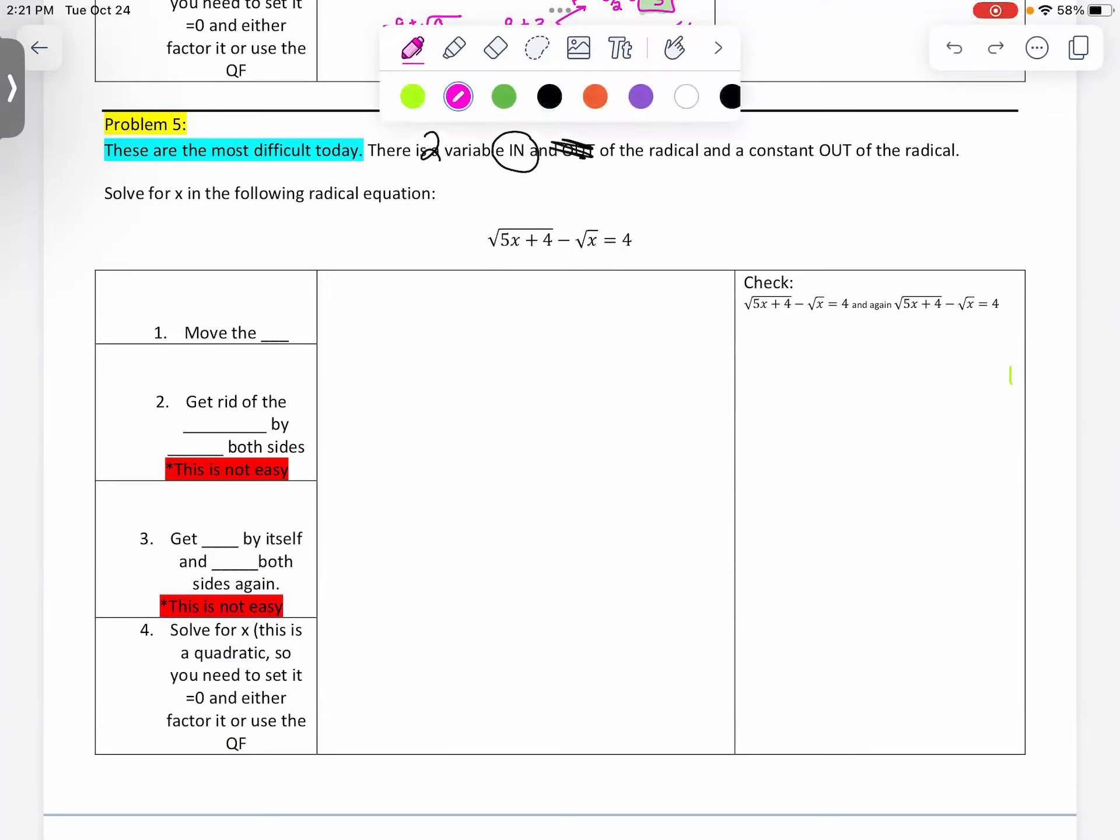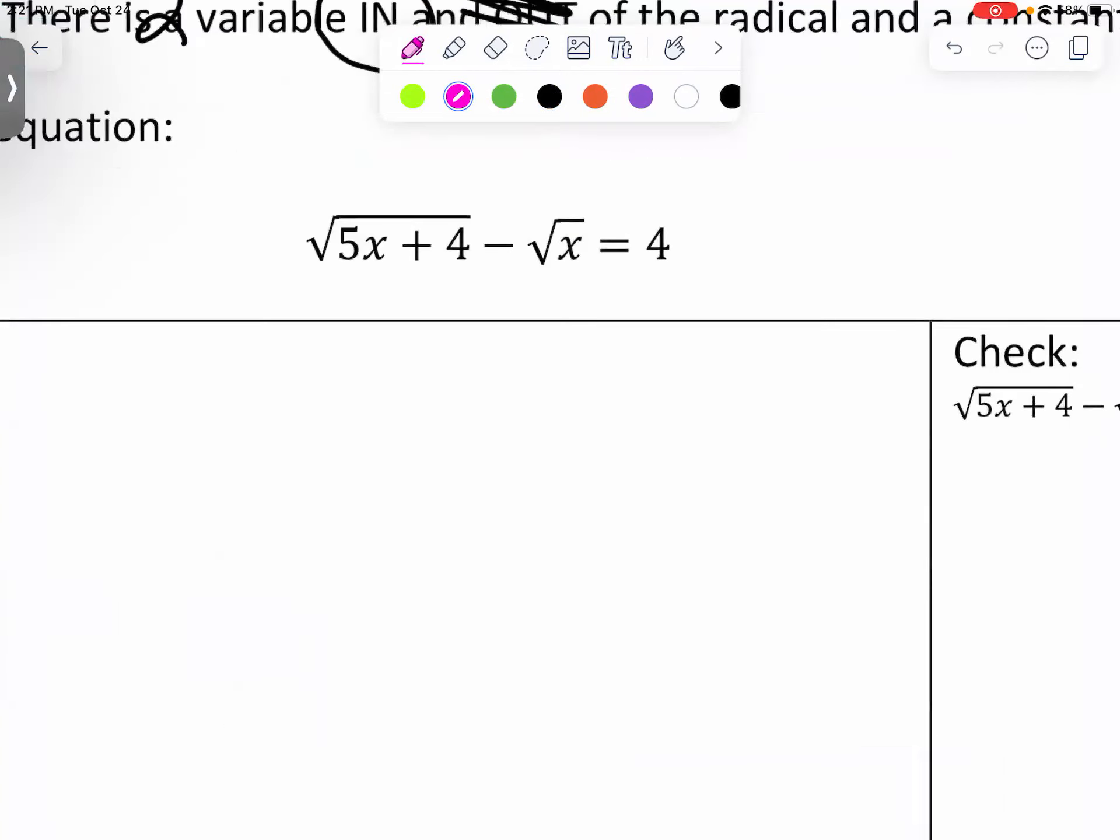The first thing we need to do is move the easy square root. In other words, the square root of x needs to move to the other side. So we're going to add the square root of x to both sides.